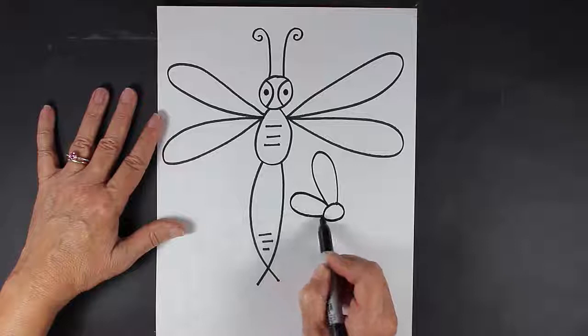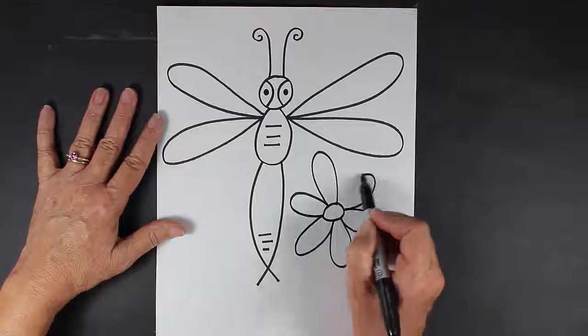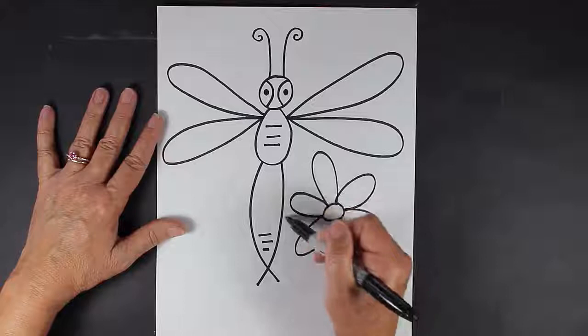Daisy is a type of flower. So the way that I make daisies is I start with a center circle and then I just make petals all the way around, and they're really long elongated C's.